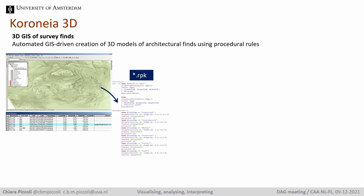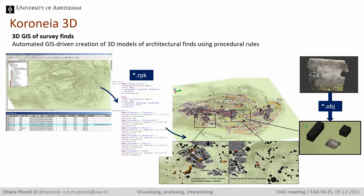This GIS-driven automated 3D modeling makes concentrations and clusters of particular stones more intuitively visible on the 3D model of the hill, helping in the interpretation of survey finds. I did this for architectural finds, but it would be interesting to do something similar for pottery finds, for example, to see what kind of clustering emerges.